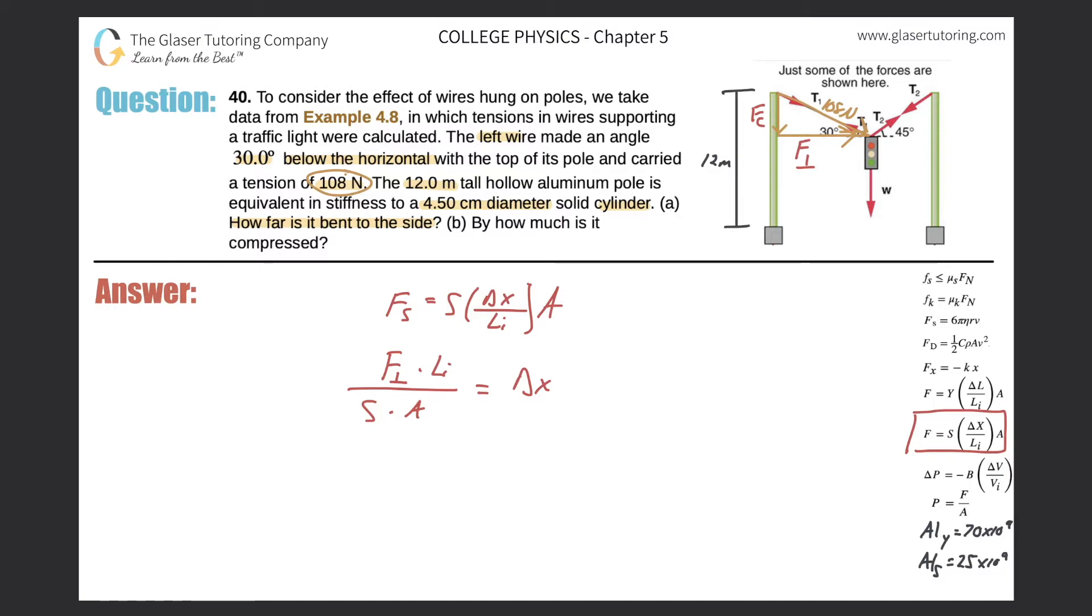Instead of writing F sub S for force of shear, I'm just going to write F sub perpendicular because they're the same. Going back to the triangle on the upper right-hand side, how do I find this component to the force vector? We're going to use trigonometry. I know this angle, I know the hypotenuse, I'm looking for the side adjacent. I'm going to use cosine. Cosine of theta equals adjacent over hypotenuse. So cosine of 30 equals my force perpendicular divided by 108. The perpendicular force will be cosine of 30 times 108, so we get 93.5 newtons.